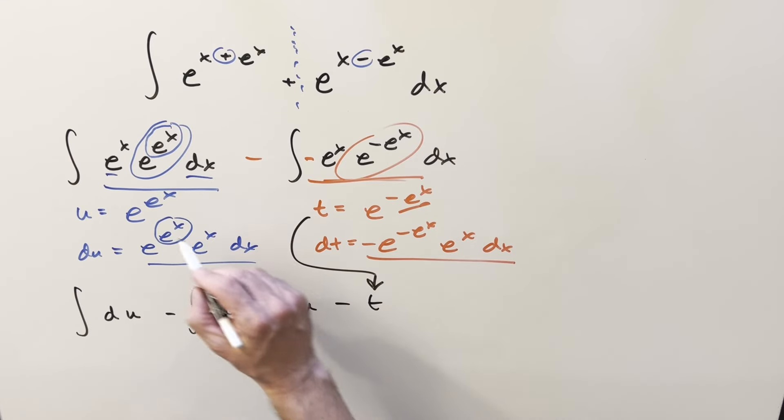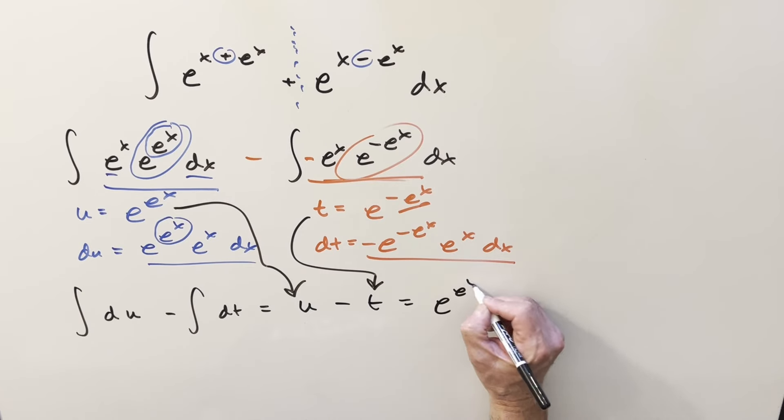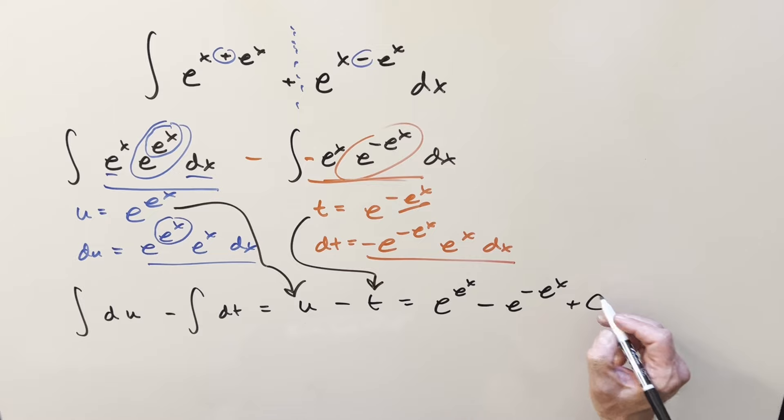Back substitute in order to finish it off. And so for my final solution to this, we just get e to the e to the x minus e to the minus e to the x. Add a plus c on there and that's it.